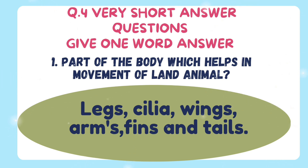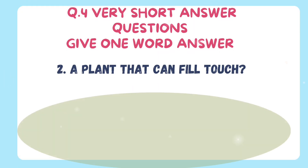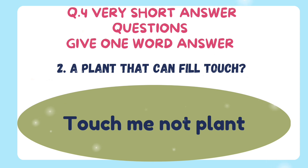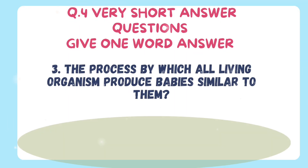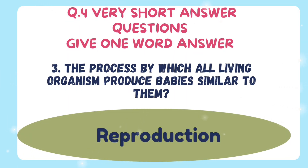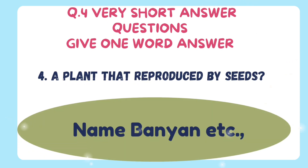The second one — a plant that can feel touch. The answer is the touch-me-not plant. The third question — the process by which all living organisms produce babies similar to them is called reproduction. The last one — a plant that reproduces by seeds, namely neem, onion tree, etc., and many more like it.